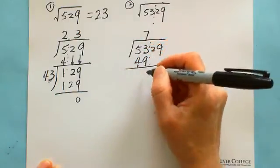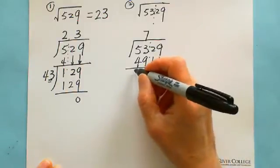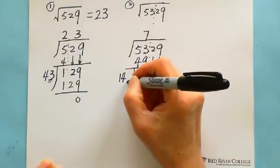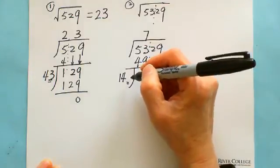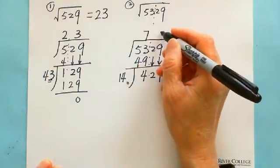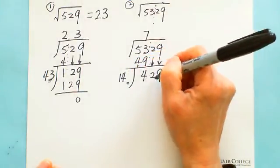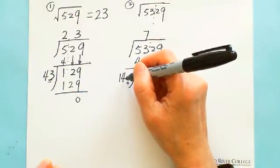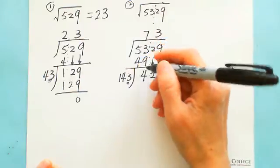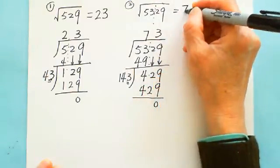Subtract from the left, and you get 4. Carry it on — the next two digits give 429. Next, the divider is double this number: 14. The next digit you need to estimate — this digit will be the same on both sides. If you try 4, then 14 times 4 is 56 — too big. So use 3: 3 times 14 is 42. With 3 here: 3 times 3 is 9, and 3 times 4 is 12. So the answer is 73.